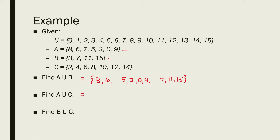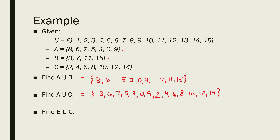Let's try A union C. I start by listing set A, then I list set C next to it: 2, 4, 6, 8, 10, 12, 14. Now I look for duplicates. I see two 8s, so I get rid of one. Checking for anything else duplicated — there doesn't appear to be anything else. So now I have A union C.